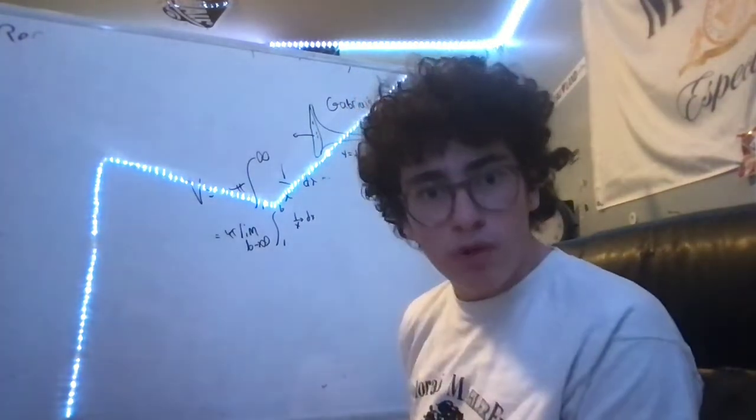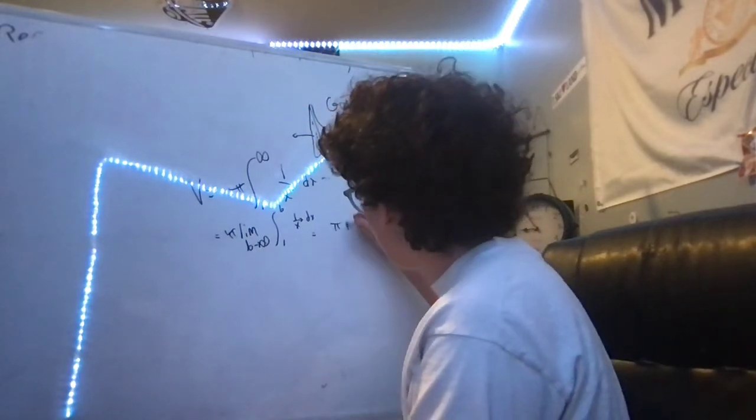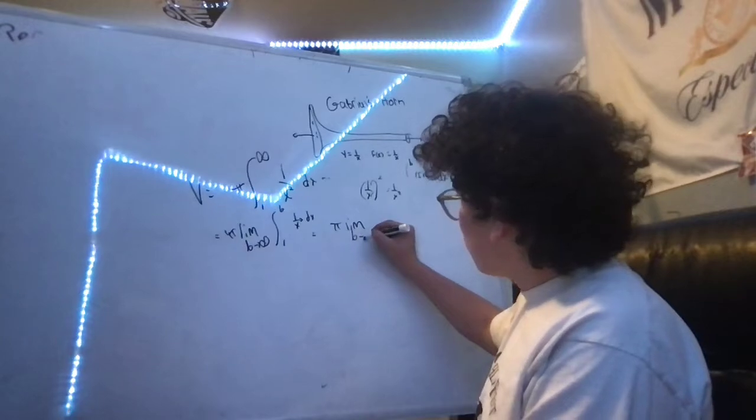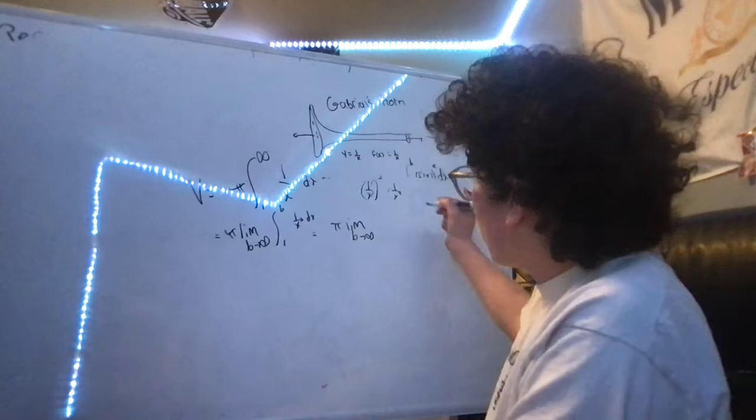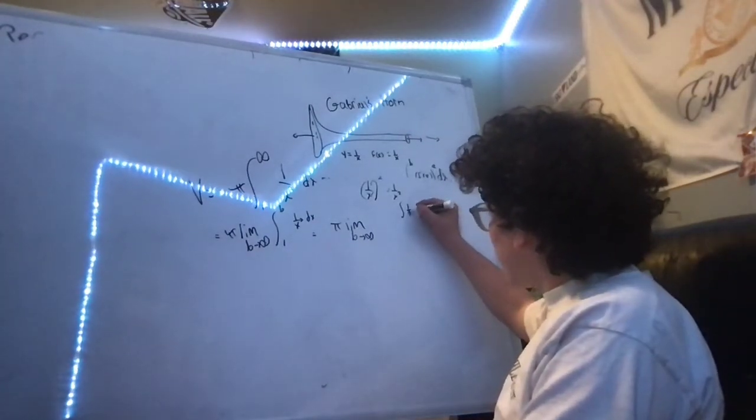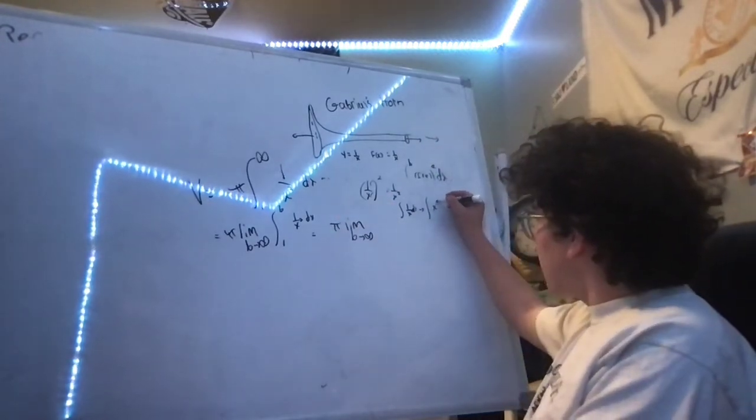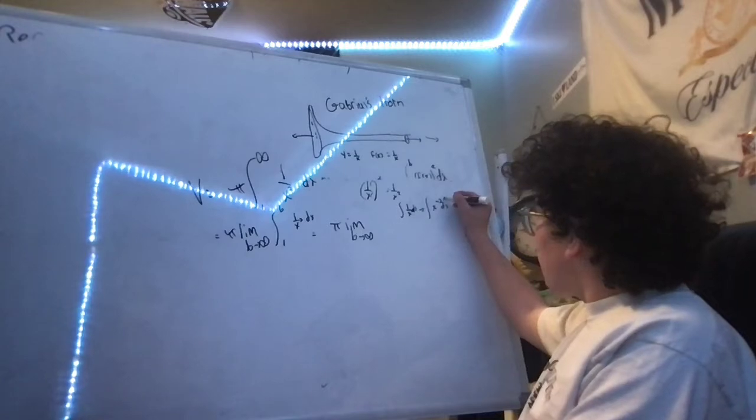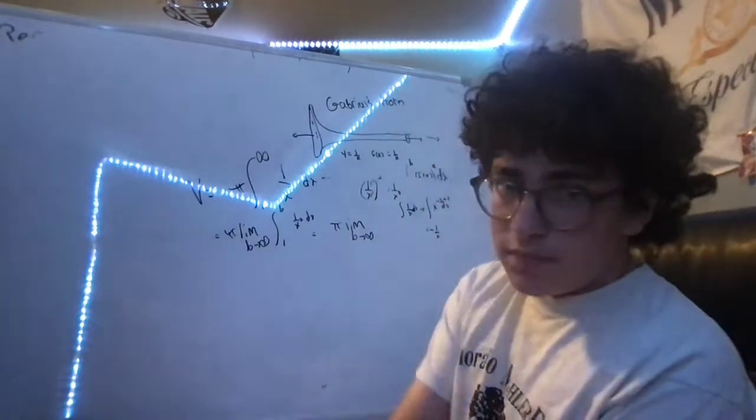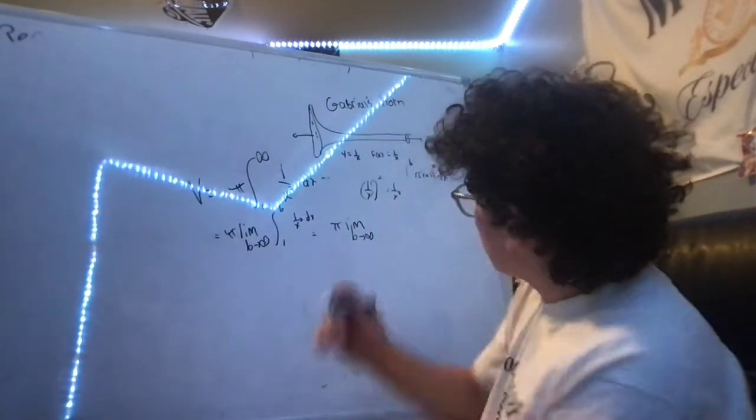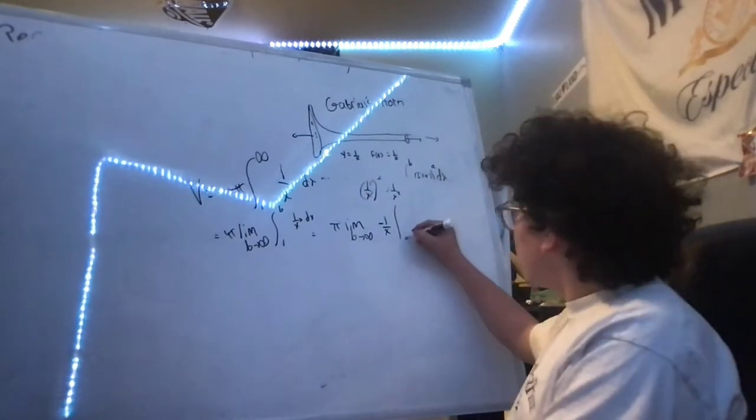Now we can say that if we take the anti-derivative, this is pi limit as b approaches infinity. What's the anti-derivative of 1 over x squared? Let's use the reverse power rule. Integral of 1 over x squared, we can say that this is x to the negative 2. Add 1, divide by that power, negative 1 over x.